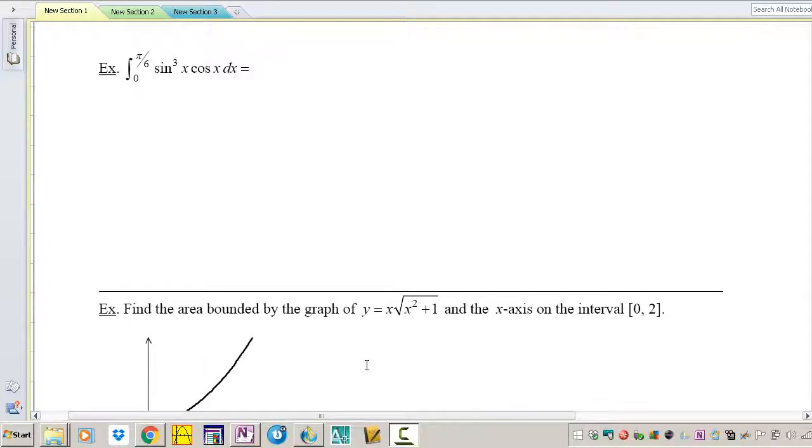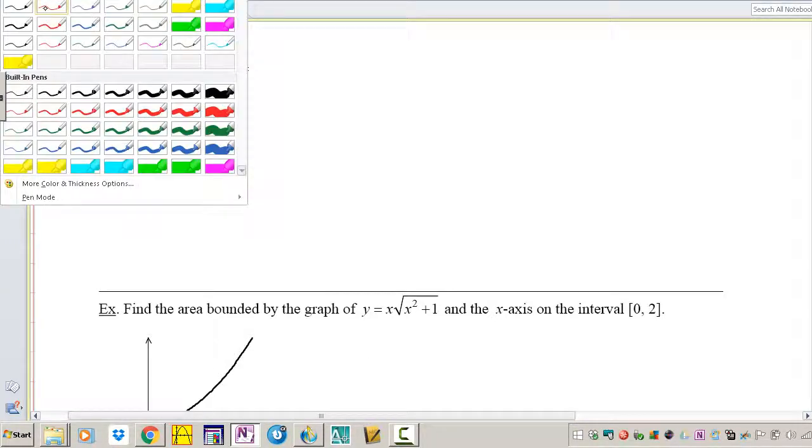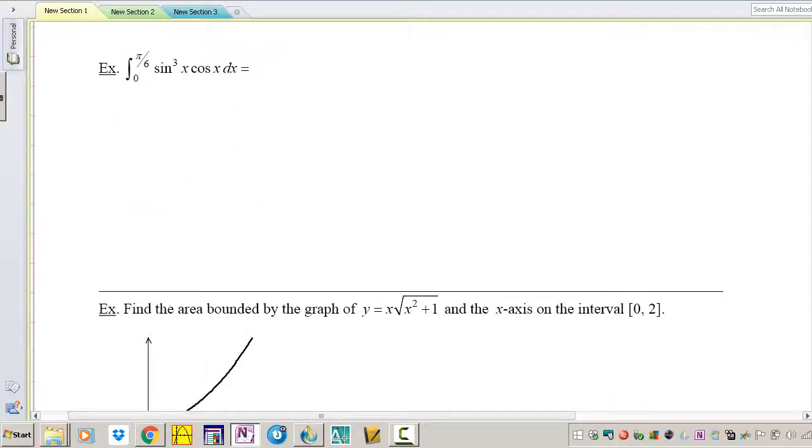Hey guys, welcome to the second part of 4.5 with using u-substitution with definite integrals. So next, the last page of this worksheet we have sine cubed of x cosine, we're taking the integral from 0 to pi over 6.